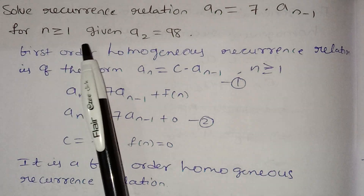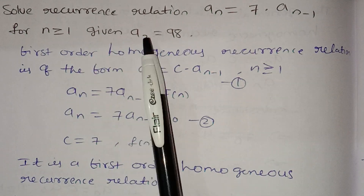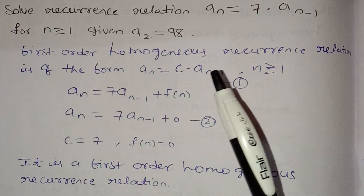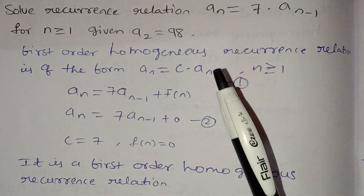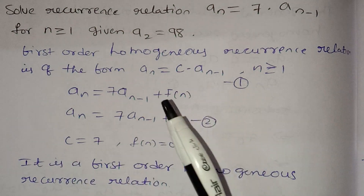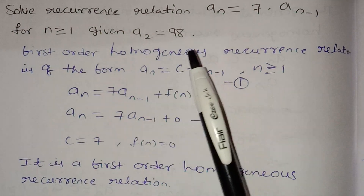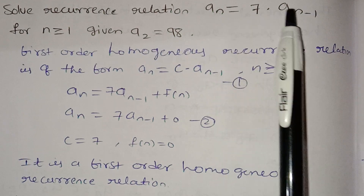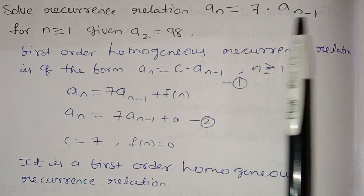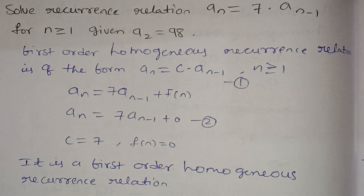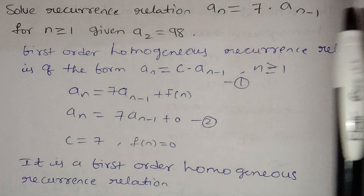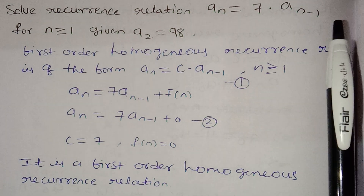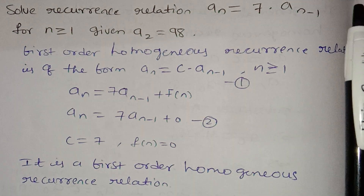For n greater than or equal to 1, given a₂ equals 98. We need a₀. So we need to solve the recurrence relation aₙ equals 7·aₙ₋₁. Here we need f(n) equals 0 for this one — we call it a homogeneous recurrence relation.